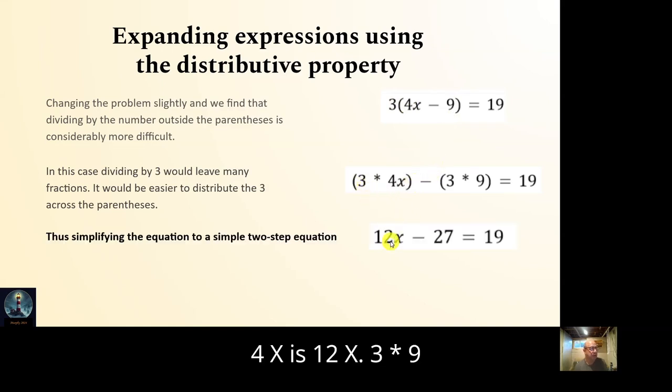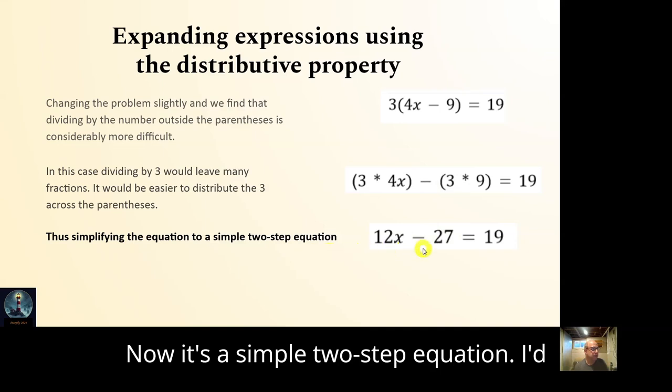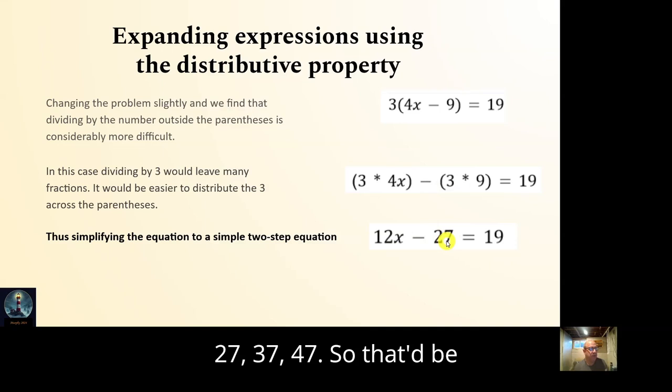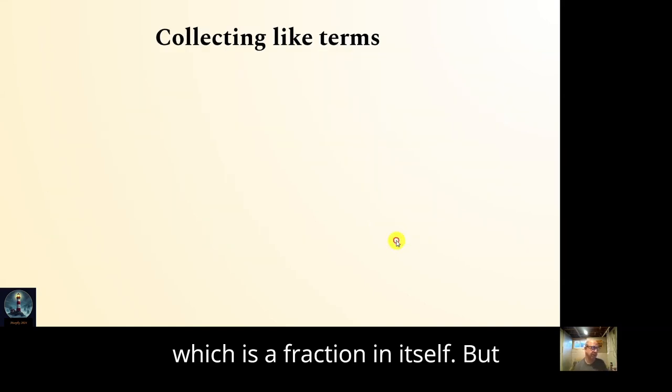So 3 times 4x is 12x. 3 times 9 is 27. The minus is still there. Now it's a simple two-step equation. I'd add 27 to both sides. So 27, 37, 47. So that would be 46 divided by 12, which is a fraction in itself.